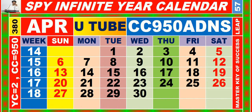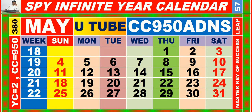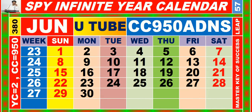Calendar for the month of May having calendar code equal to 950. Calendar for the month of June having calendar code equal to 950.